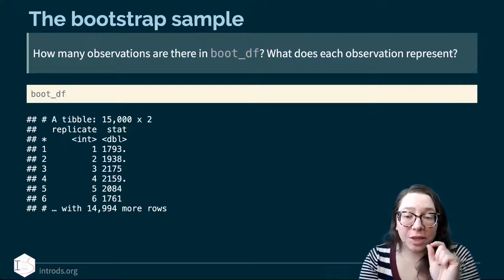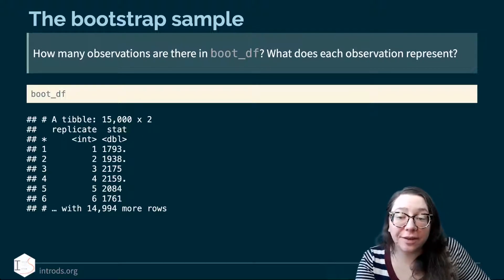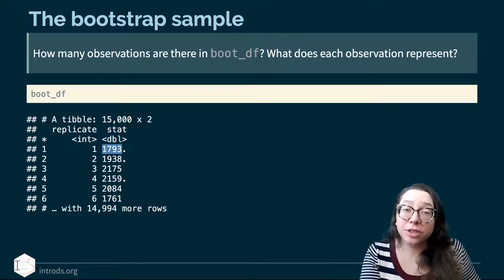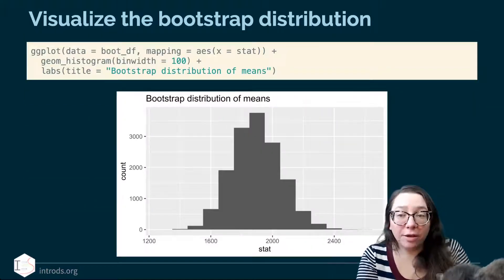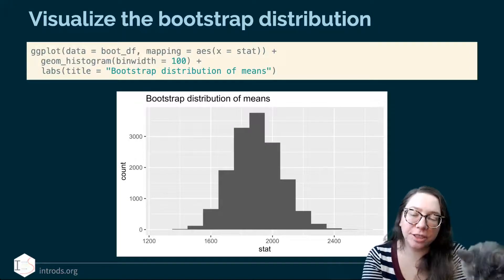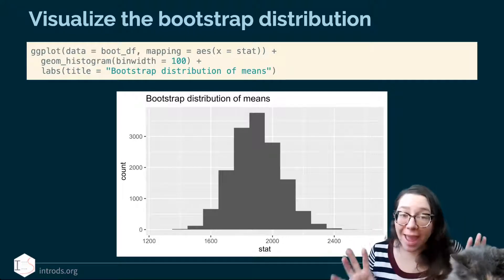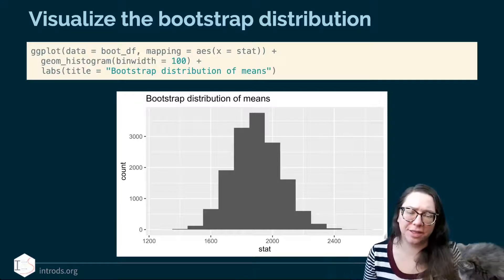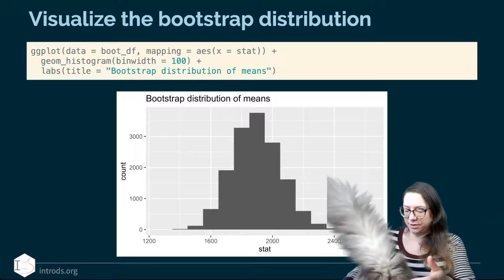Those 15,000 means each represent a mean of a bootstrap sample — each value is no longer an individual flat but the mean of 15 flats. We look at how much they vary from one to another so we can quantify our uncertainty around the sample means. Here is a distribution of those 15,000 means, and we can see the center is right around our sample mean of 1,895. Everything is distributed around that original sample — so if your original sample was not good, none of this is worthwhile.